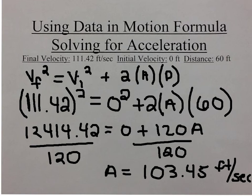In order to get the A by itself, you divide both sides by 120. When you do that, you find out the A, or acceleration, equals 103.45 feet per second squared.